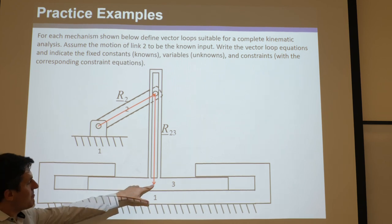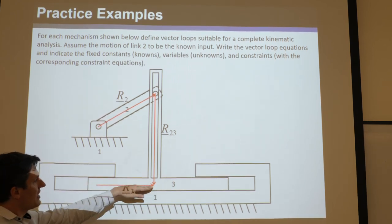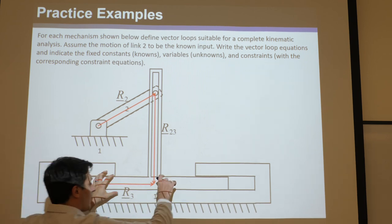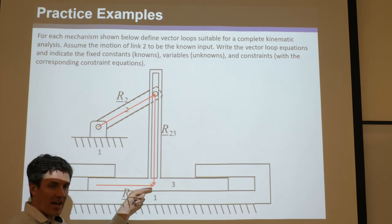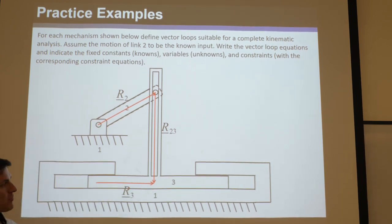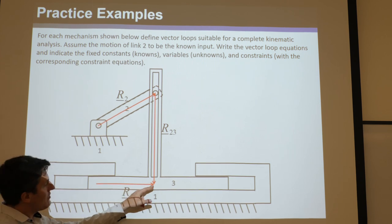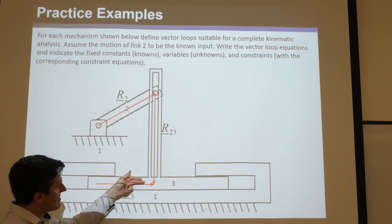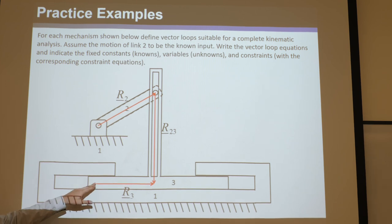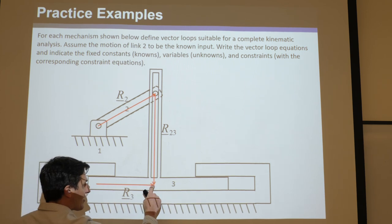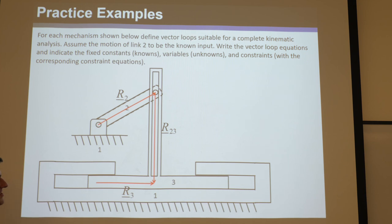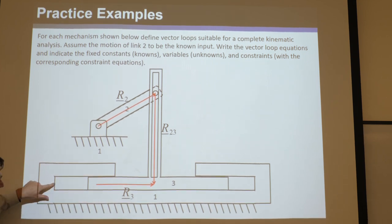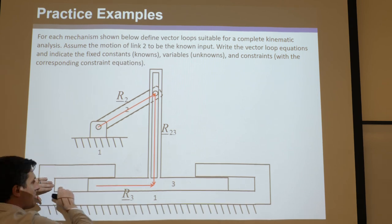Then we went down here because we want another vector that does capture three — all three does is translate in this direction, so you want something right in that direction to capture how three moves. We put it to there for a nice 90-degree angle. This point here you'd think is stuck on three, but this point is stuck on one. So you might think to pull this back to there so it actually looks like it's stuck on one and then you move it.